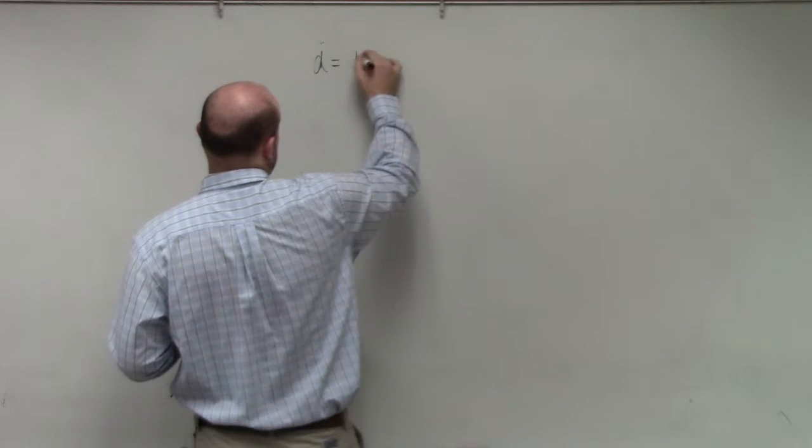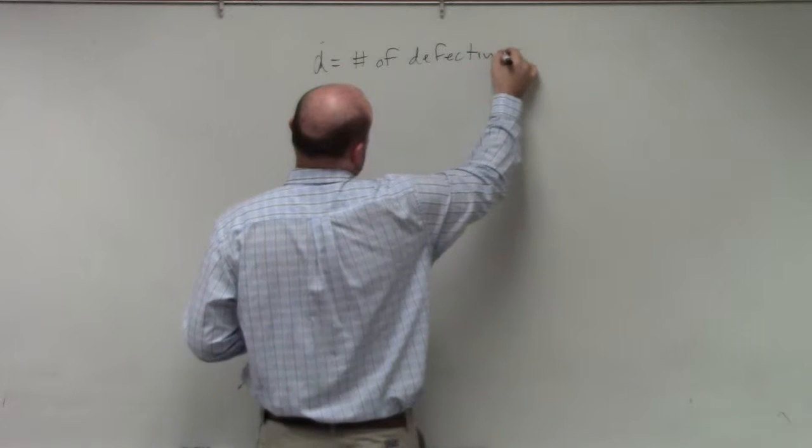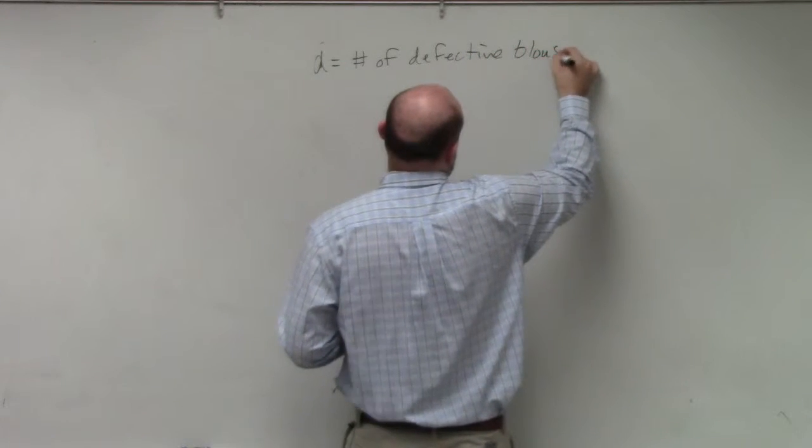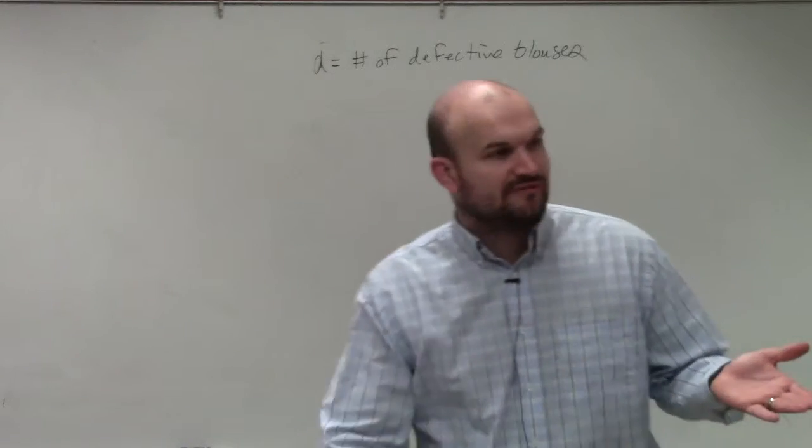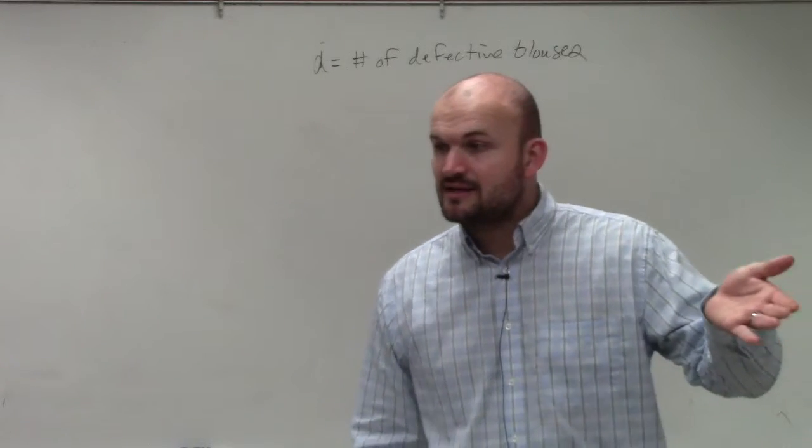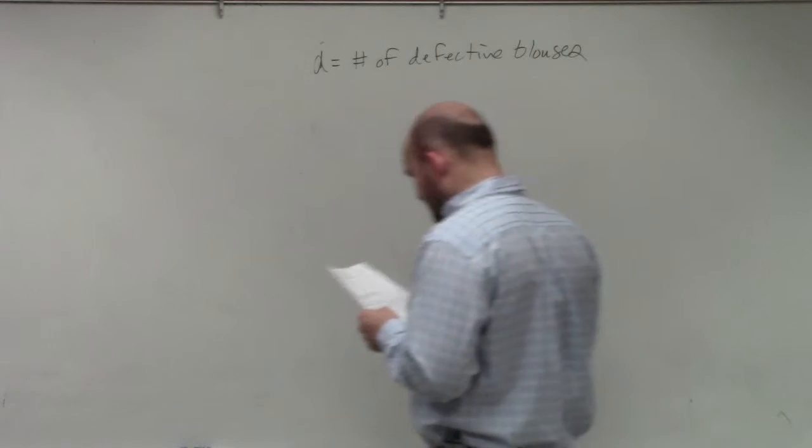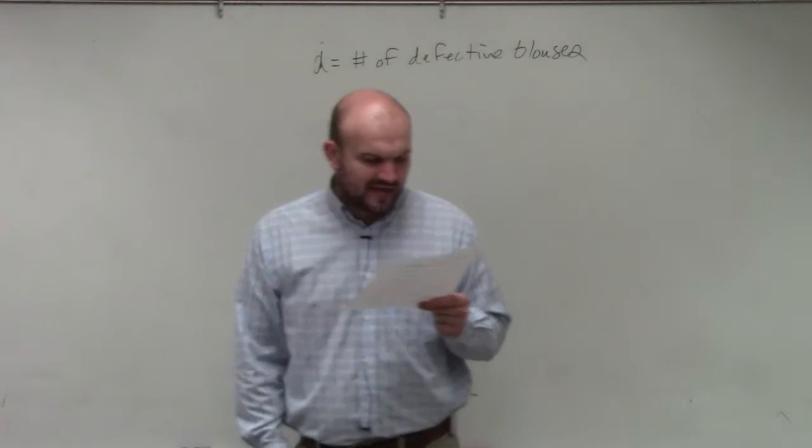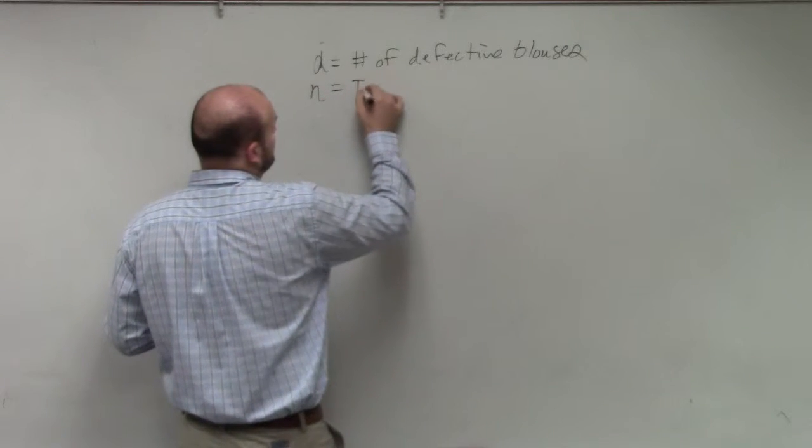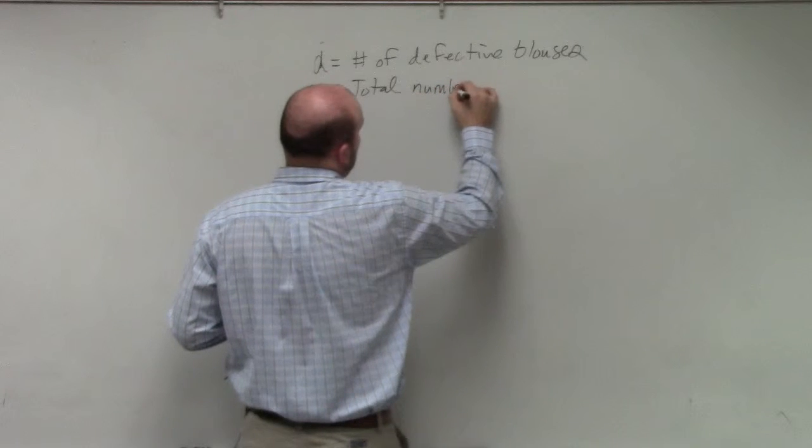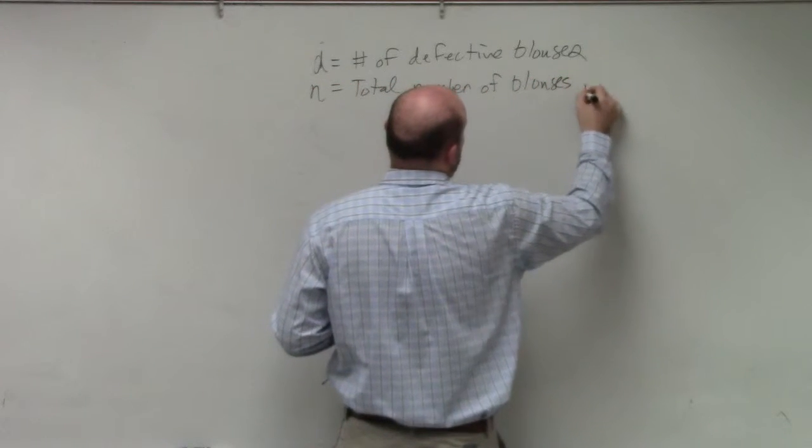So d equals number of defective blouses. Whenever I'm doing word problems, I always want to write in, if they're giving me a variable and they tell me what the variable is, if the variable is defined, then I want to write that down. D is a function of the total number of blouses n produced by the factory. So n equals total number of blouses produced.